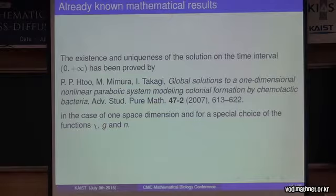So now what is known mathematically? The existence and uniqueness of the solution was proved by Ito, Mimura, and Takagi in the case of one space dimension and for a special choice of the functions chi, g, and n. And this on an infinite time interval.